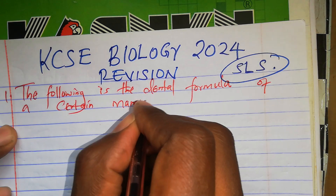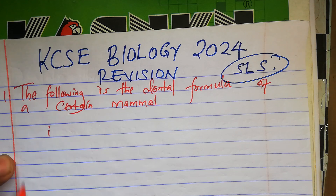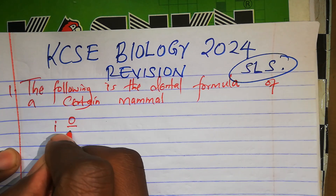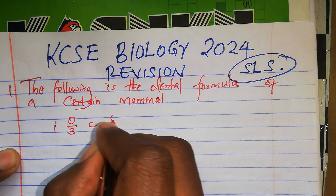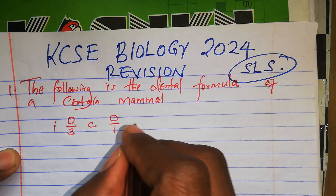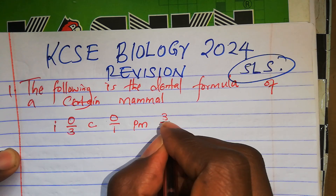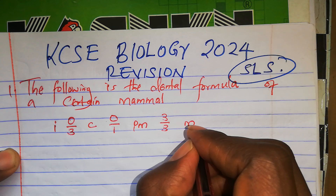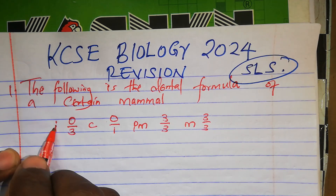The dental formula is: I (incisors) 0 over 3, C (canines) 0 over 1, PM (premolars) 3 over 3, and molars 3 over 3. On the upper jaw we have 0 incisors, and the lower jaw 3. Canines: upper jaw 0, lower jaw 1. Premolars: upper jaw 3, lower jaw 3. Molars: upper jaw 3, lower jaw 3.